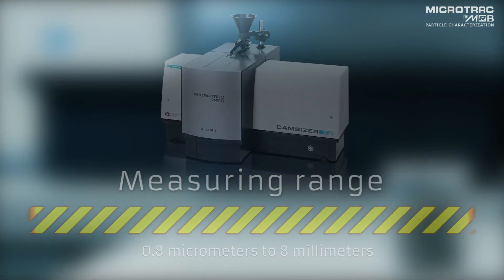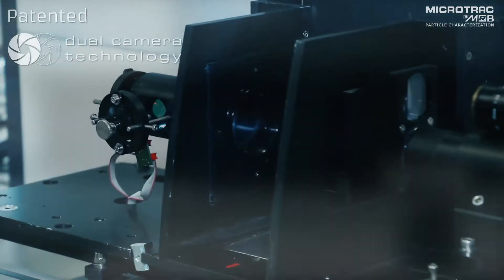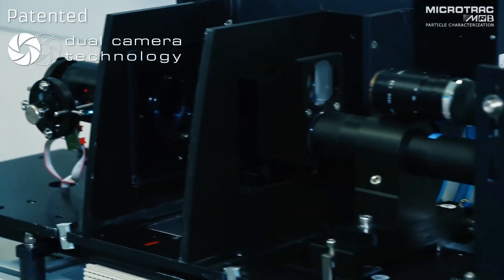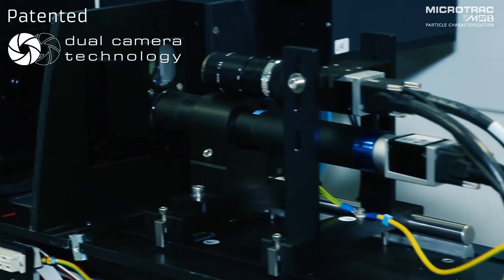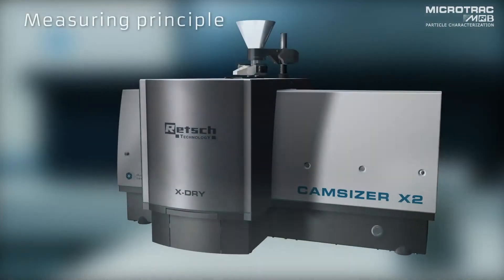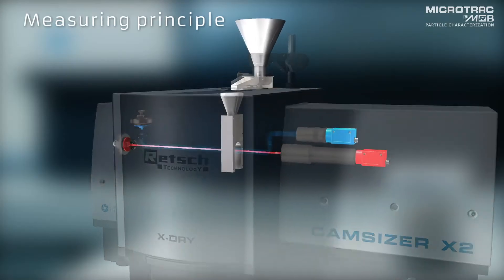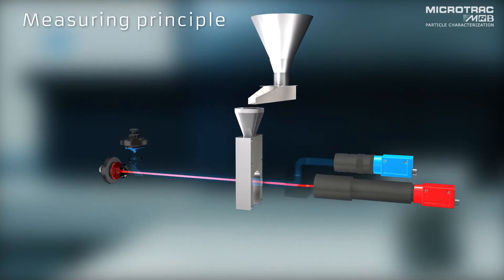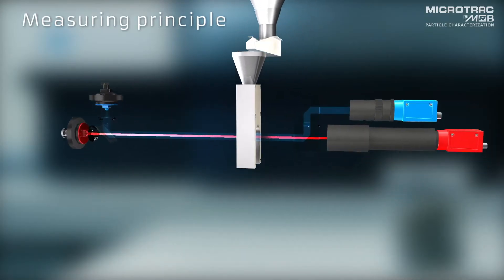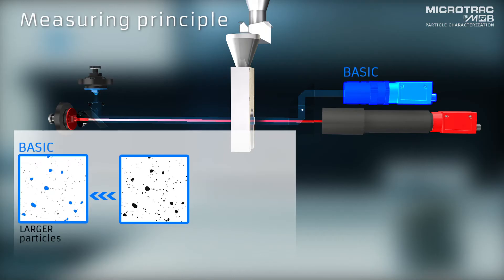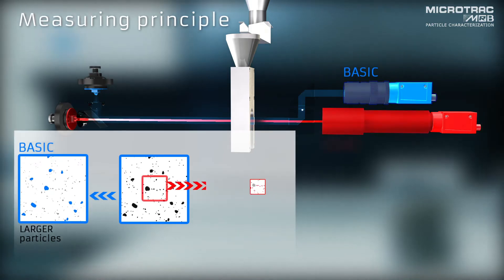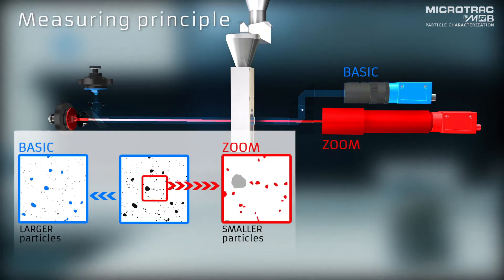The CamSizer X2 covers an extremely wide size range in only one measurement run. This is made possible by the patented dual camera technology, where a basic camera detects larger particles, whereas a specially designed high-resolution zoom camera analyzes particles with high accuracy.